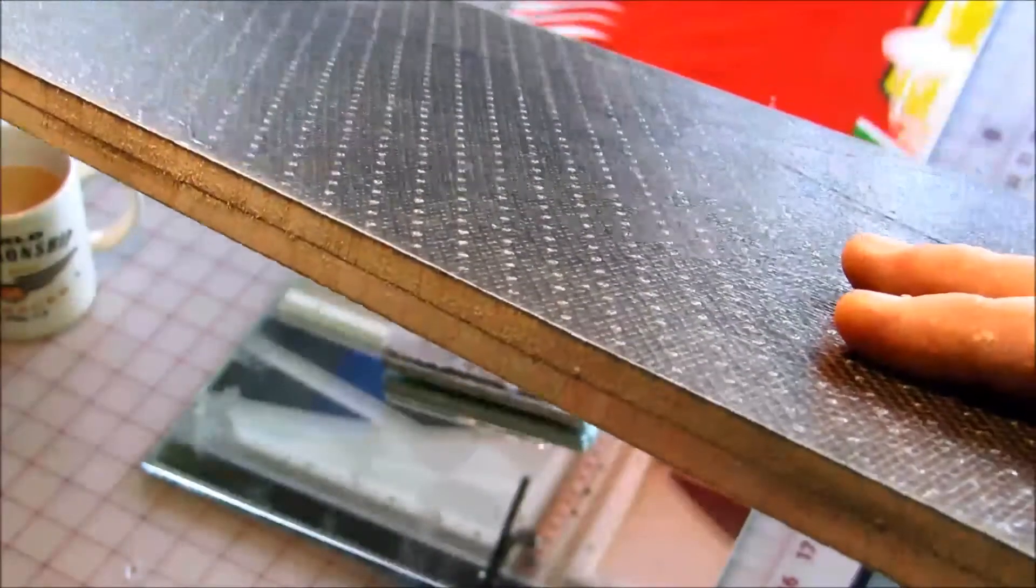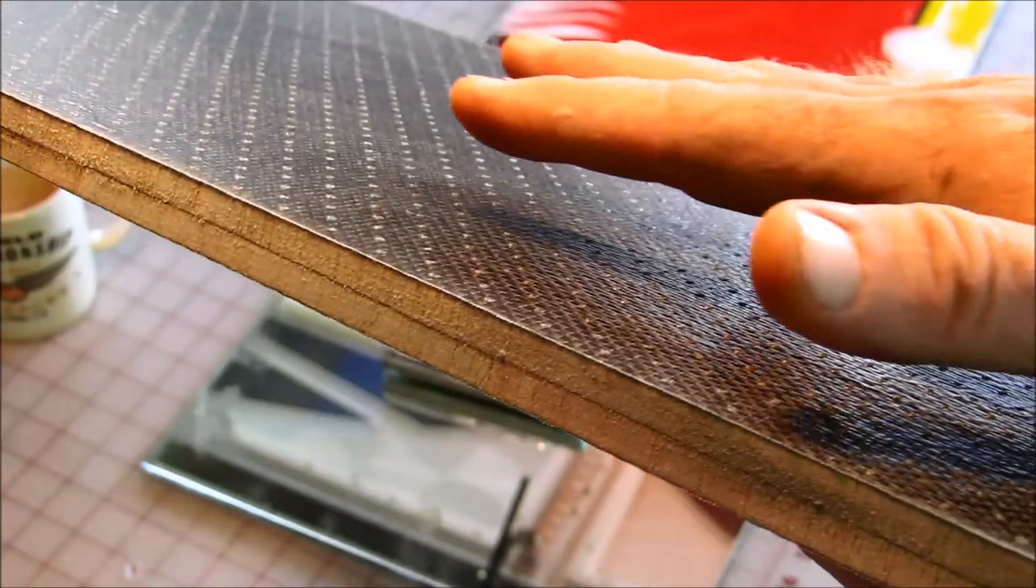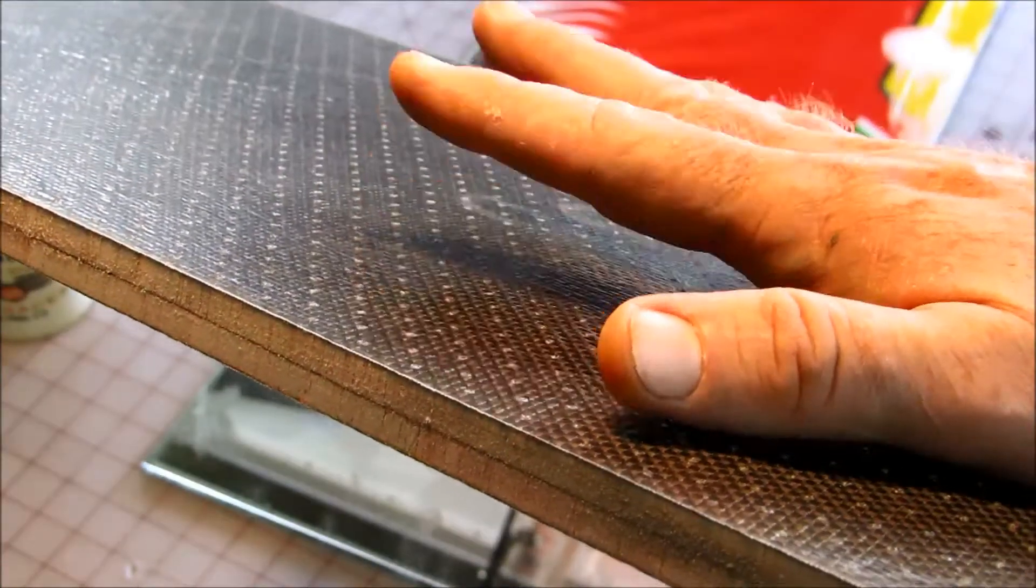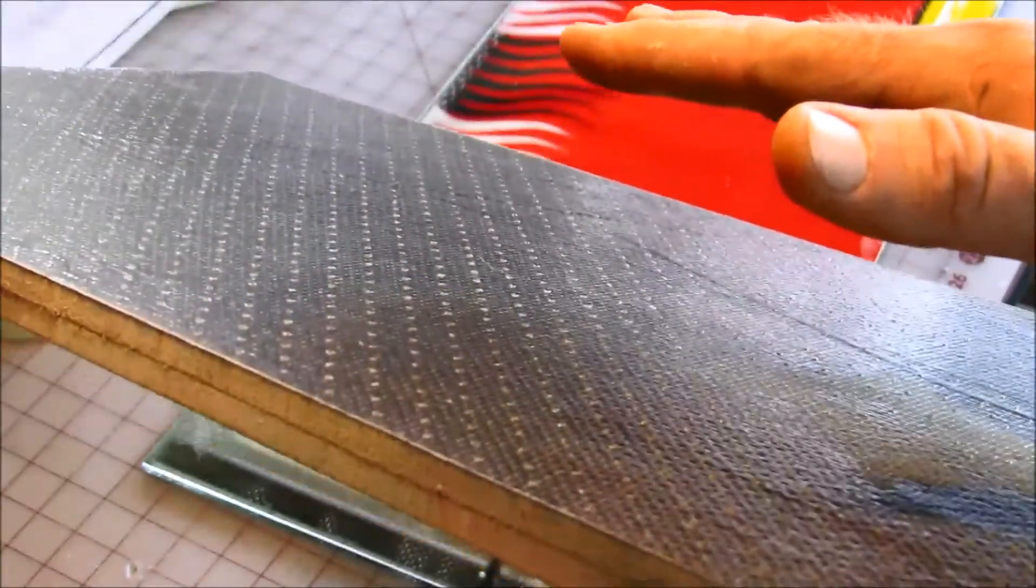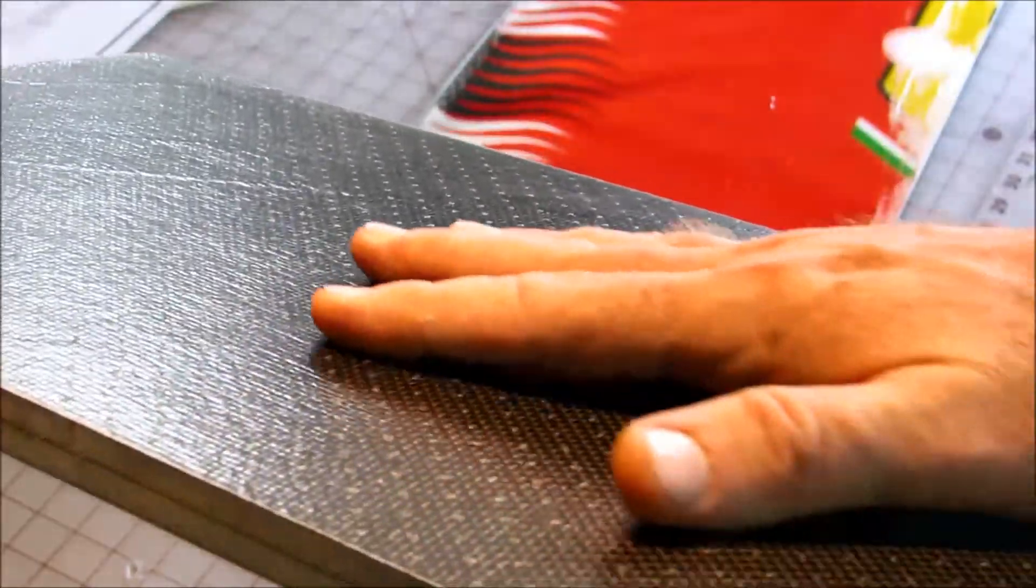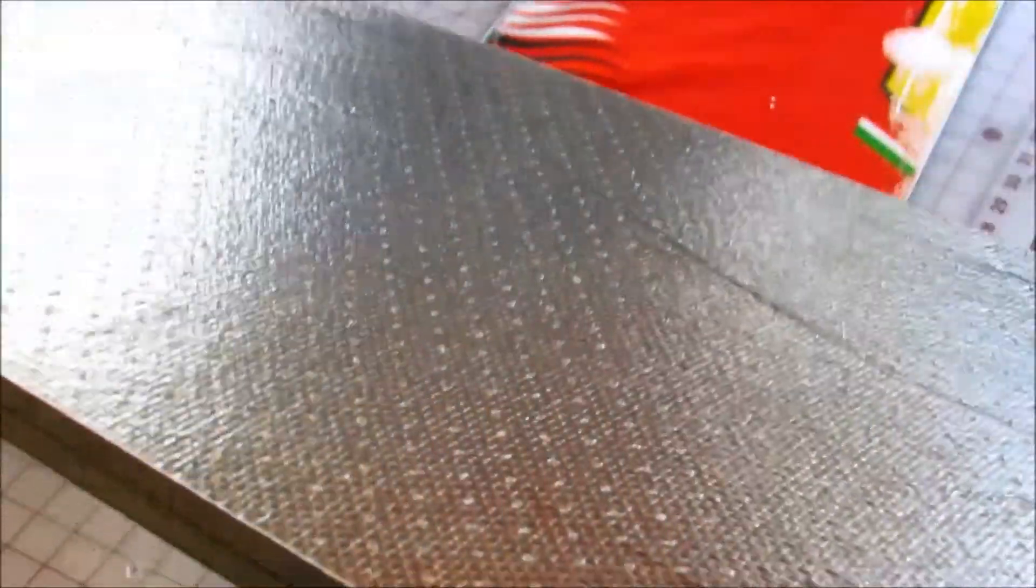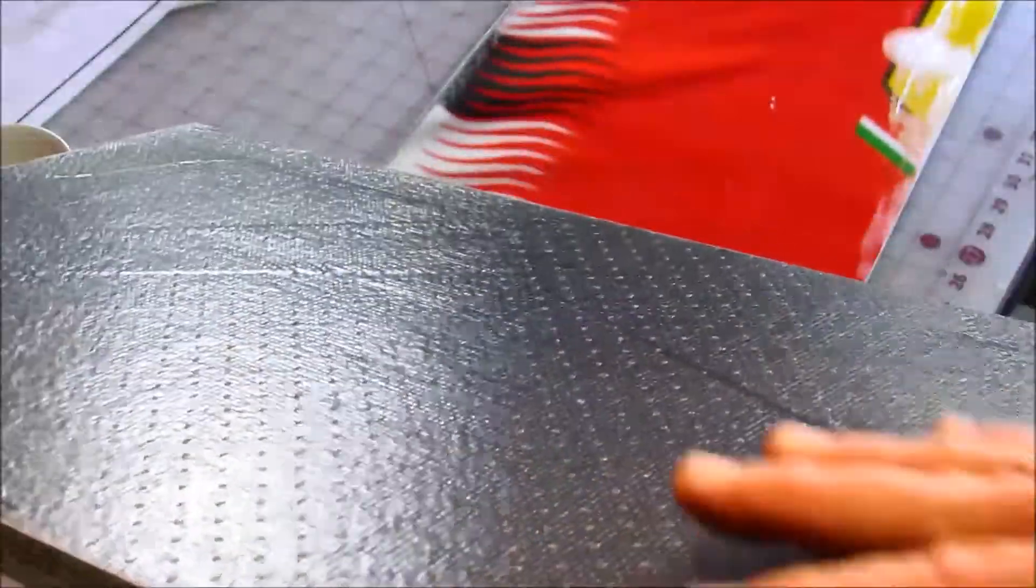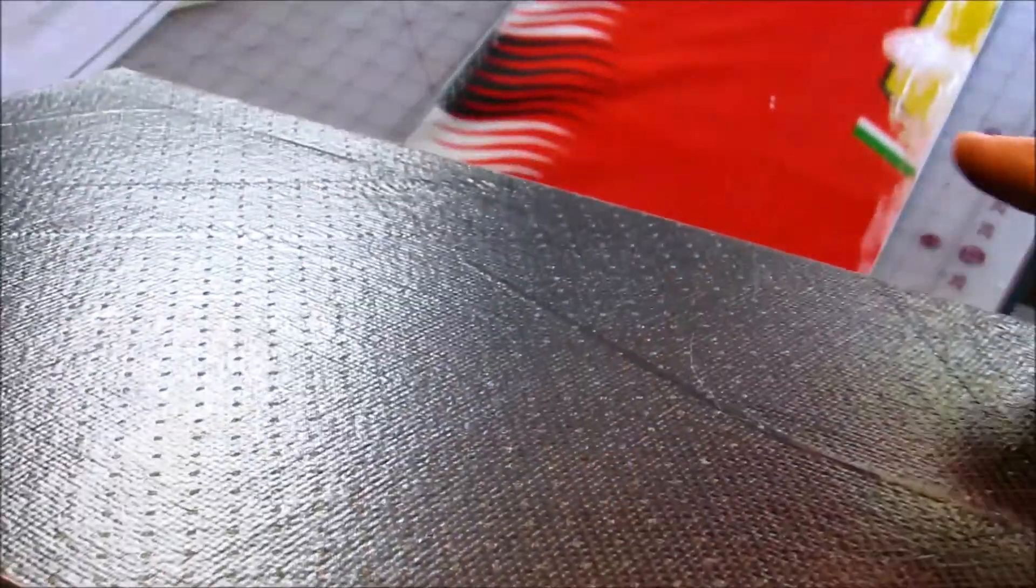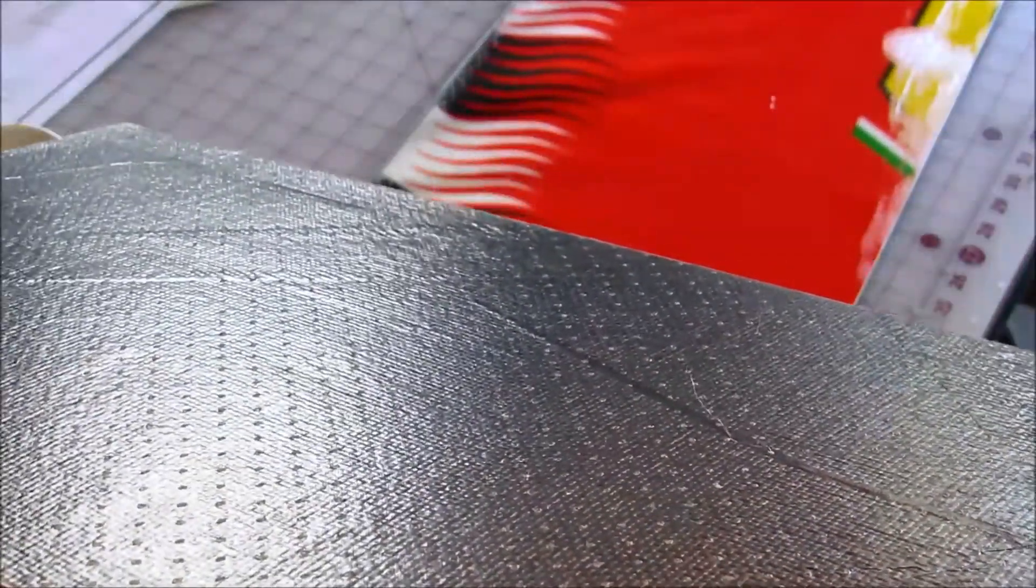Now that's because I forgot to lay down peel ply. If I put peel ply down between the carbon and that perforated plastic, then what I would have is a really nice surface that is textured and doesn't need to be sanded or prepped in any way before I can start gluing to it.